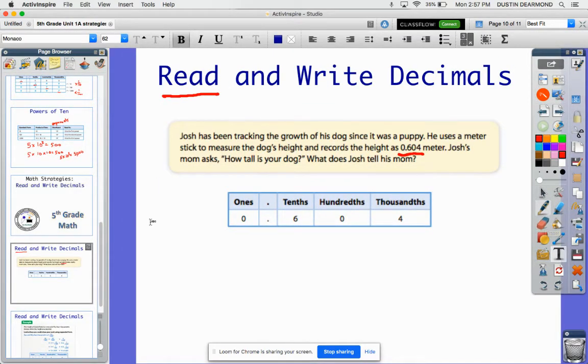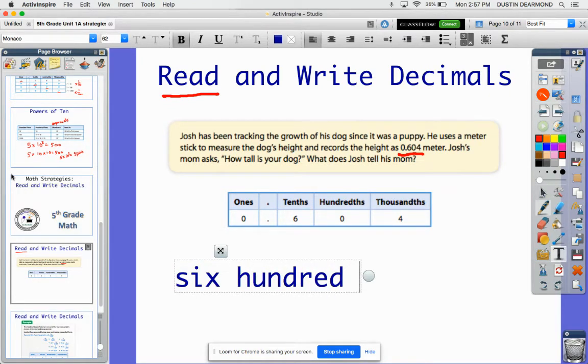So if I type this out, it would be 604. There's nothing in the hundreds place, so it's 604. I have three digits, 604.